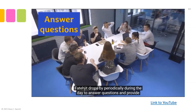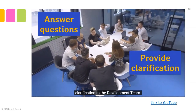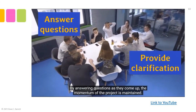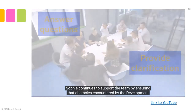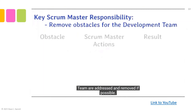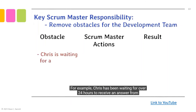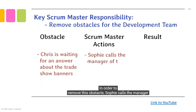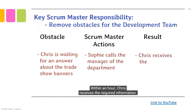Fadijit drops by periodically during the day to answer questions and provide clarification to the development team, maintaining the momentum of the project. Sophie continues to support the team by ensuring that obstacles are addressed and removed if possible. For example, Chris has been waiting over 24 hours for an answer from the supply chain and logistics department regarding the trade show banners. To remove this obstacle, Sophie calls the department manager, and within an hour Chris receives the required information.